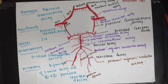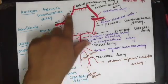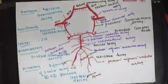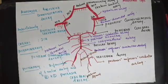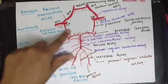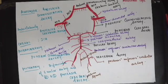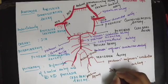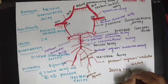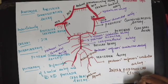These are the arteries forming the Circle of Willis. It is an arterial circle found at the base of the brain — an anastomosis between the internal carotid artery system and the vertebral basilar system. It is polygonal in shape and is located in the interpeduncular fossa.